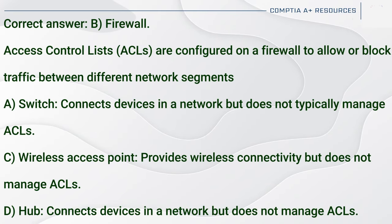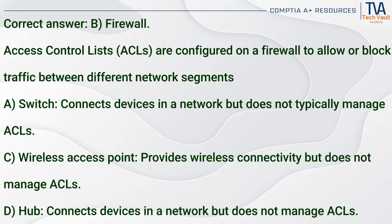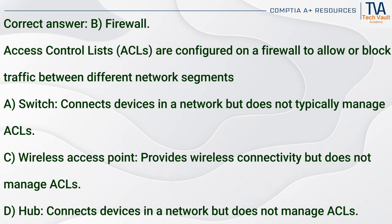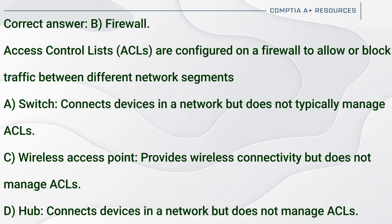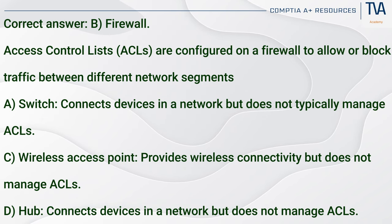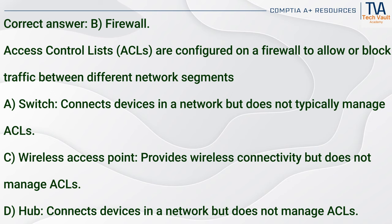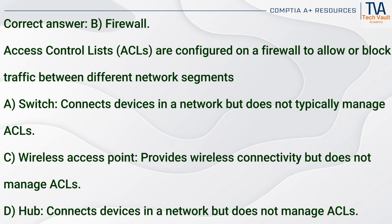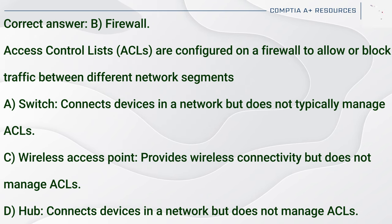Correct answer: B. Firewall. Access Control Lists (ACLs) are configured on a firewall to allow or block traffic between different network segments. A switch (A) connects devices in a network but does not typically manage ACLs. A wireless access point (C) provides wireless connectivity but does not manage ACLs. A hub (D) connects devices in a network but does not manage ACLs.